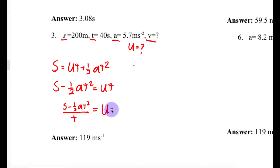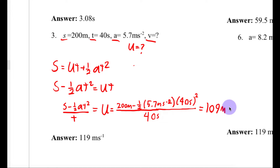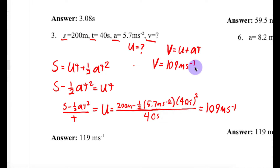Now I'll plug in the numbers: U equals 200 meters minus one-half times A times T squared, all divided by T. Calculating this out, I find that U is equal to 109 meters per second. Now that I have U, I can use the simplest equation — in my opinion V equals U plus AT — to solve for V. So V equals 109 meters per second plus A times T.